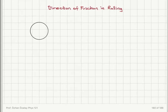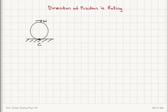I'm going to consider a disk that is going to be rolling on this surface. This is the contact point C for this disk. Let's say that it's rotating in the clockwise direction, and the center of mass has a velocity v_cm to the right.